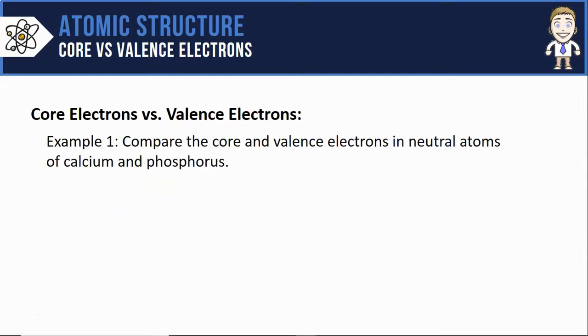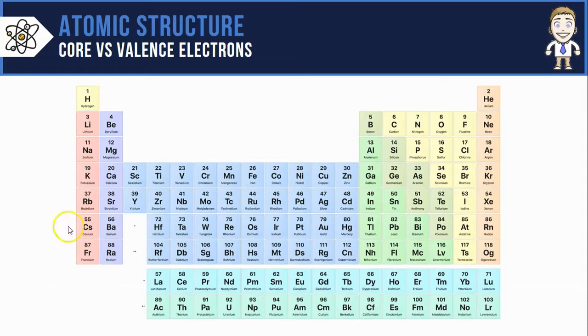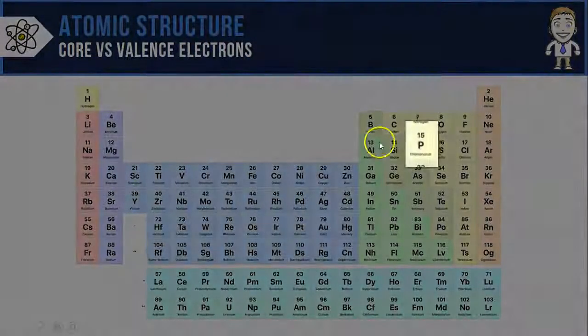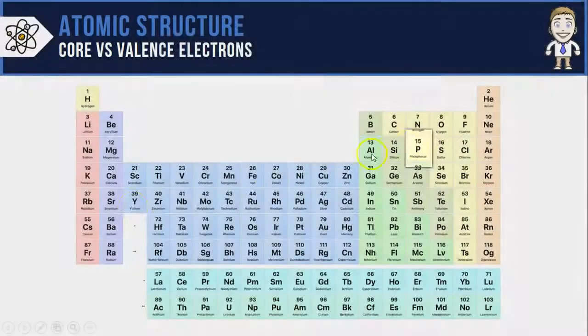So let's close the video and apply these ideas by comparing the core and valence electrons in neutral atoms of calcium and phosphorus. First thing I need is a periodic table to see how many electrons these atoms have. Calcium is right here with 20 electrons and phosphorus is right here with 15.